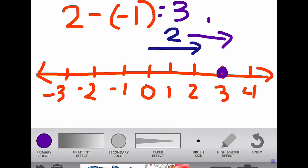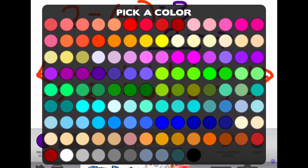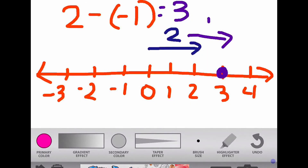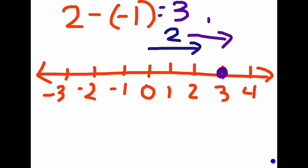Let's do that same problem using the rule so you can see how much easier it is — that way you don't have to think about changing direction on the number line. Keep the first number, then add the opposite: the opposite of negative one is positive one. So two subtract negative one becomes two plus positive one, which equals positive three.